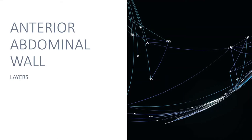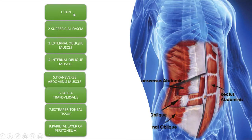Hello, in this video series on anatomy of the abdomen, today's video will cover the different layers of the anterior abdominal wall — specifically the skin and superficial fascia; the muscles will be covered in the next video. The layers from superficial to deep are: skin, superficial fascia, external oblique muscle, internal oblique muscle, transverse abdominis muscle, fascia transversalis, extraperitoneal tissue, and parietal layer of peritoneum. The peritoneum has a parietal layer lining the anterior abdominal wall and a visceral layer covering the abdominal organs.